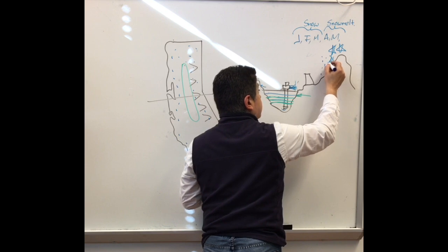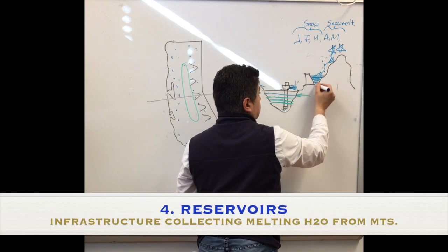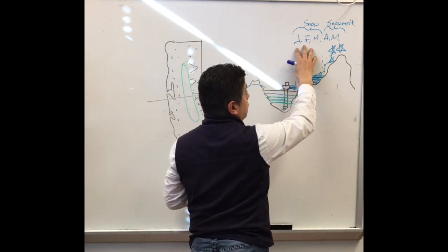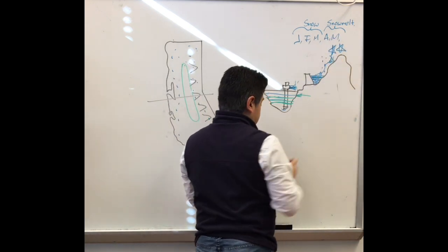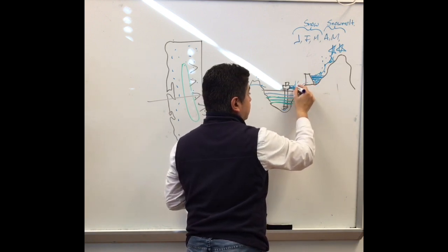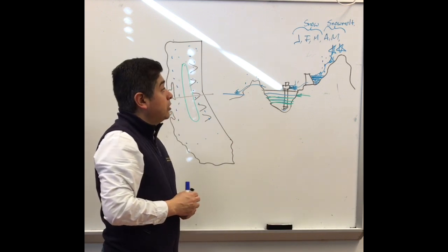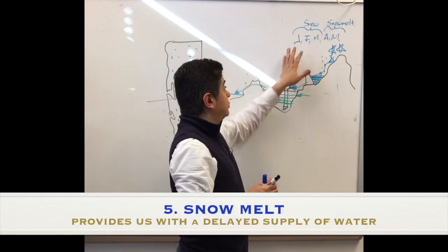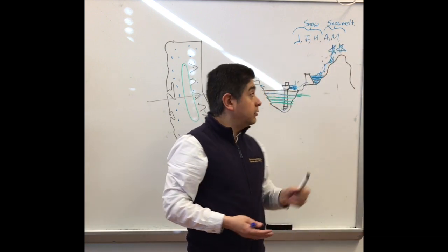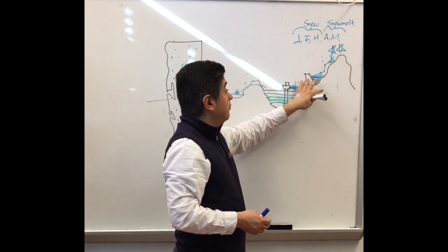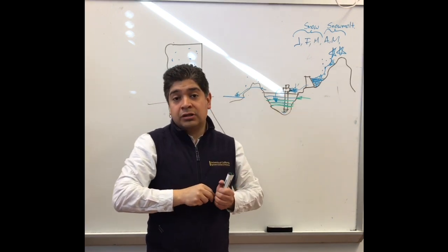As the snow starts melting, we can start capturing all that water into our reservoirs. The main idea is that snow helps us keep water stored during these months and save it for later — in April, May, and June — where we can capture it and use it for agriculture, cities, and recreation. The importance of snowmelt is that it provides a kind of time machine to move water from times when we're not using it much to periods when we need it. It also gives us the means to restore storage, whether in surface water or in the aquifers.